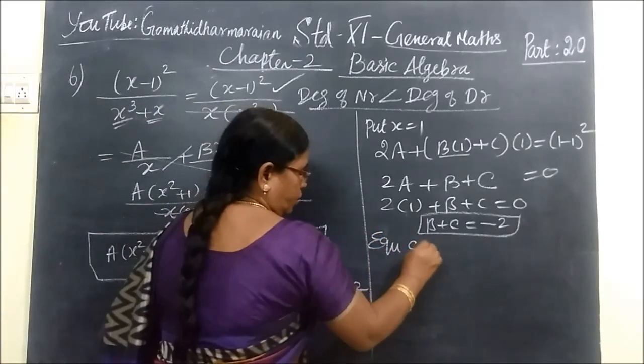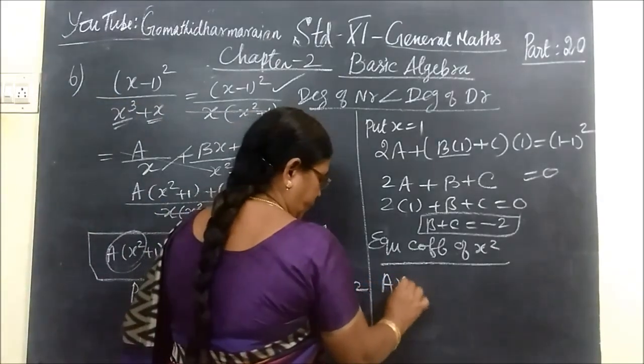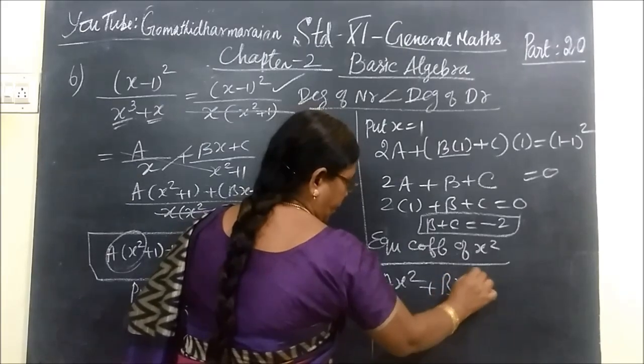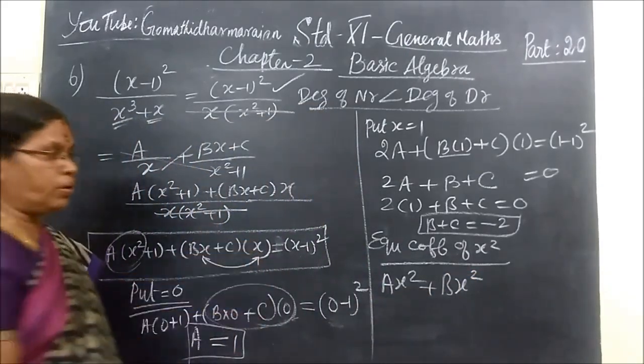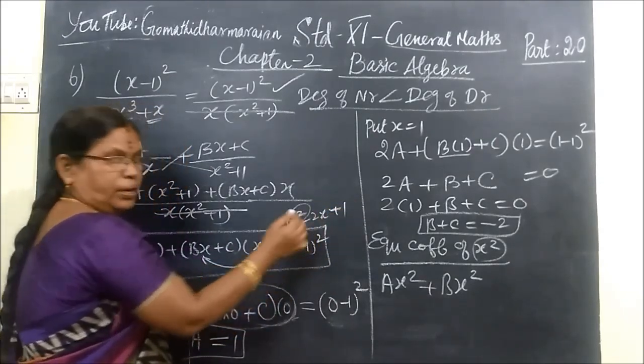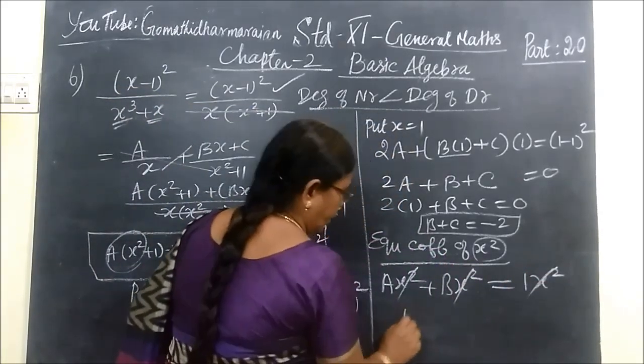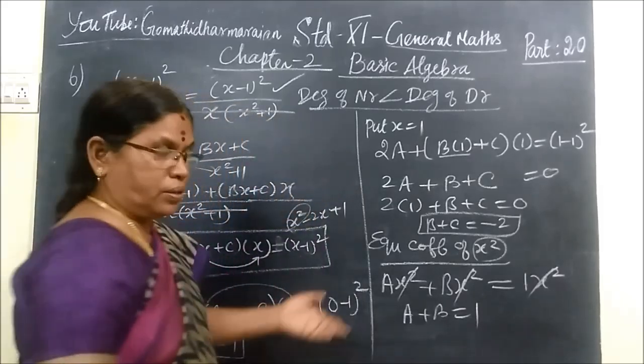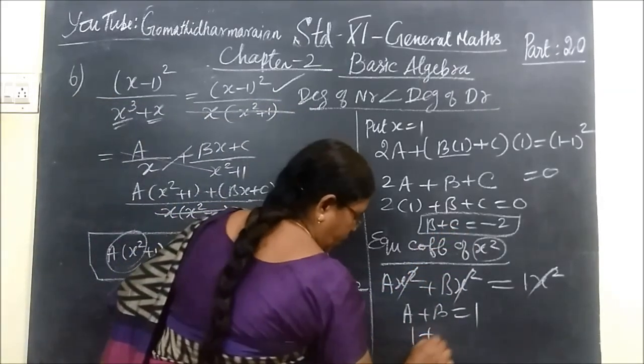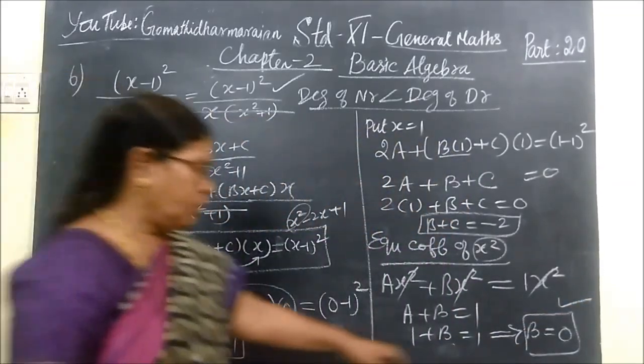Now you equate the coefficient of x². You equate the coefficient of x². In coefficient of x², you have Ax² and Bx into x, so Bx². No C term. We are equating only coefficient of x². Here if we expand, you get x²-2x+1. So here the coefficient is 1x², so A+B equal to 1. A value is 1, so 1+B equal to 1. It implies B equal to 0. So second unknown value you got.